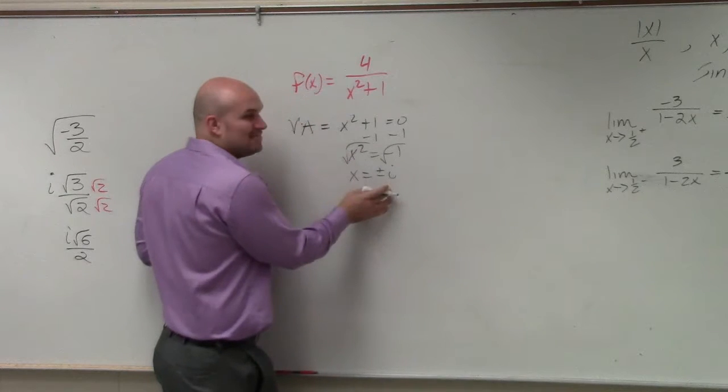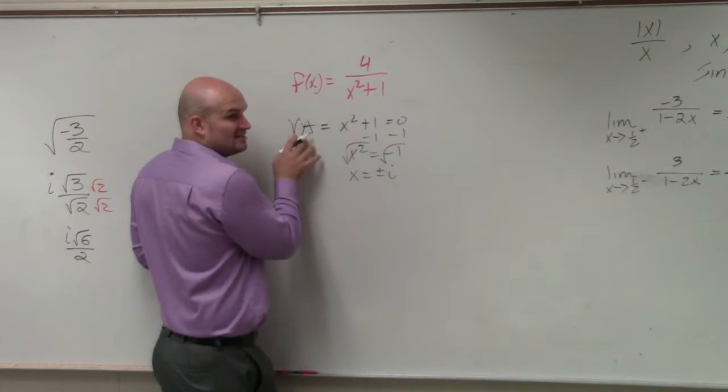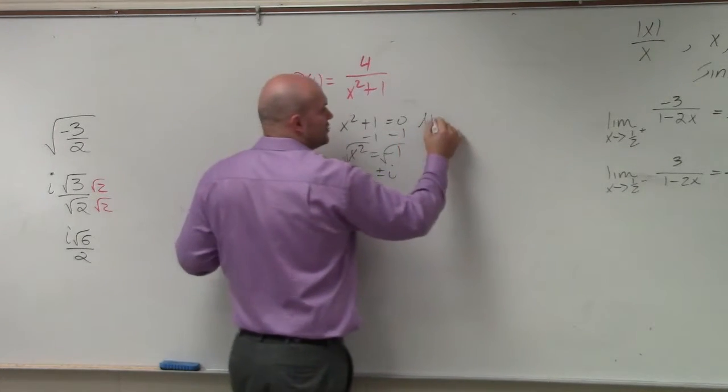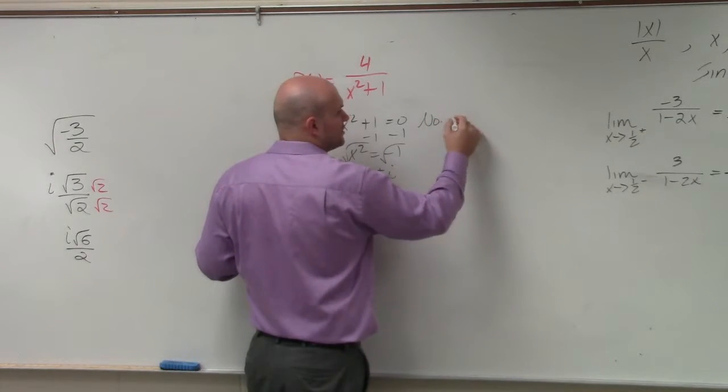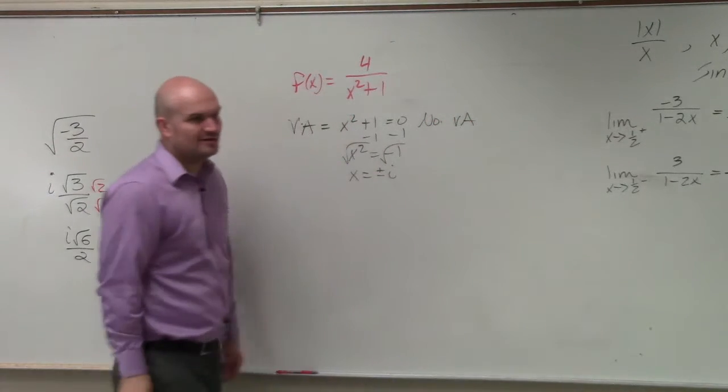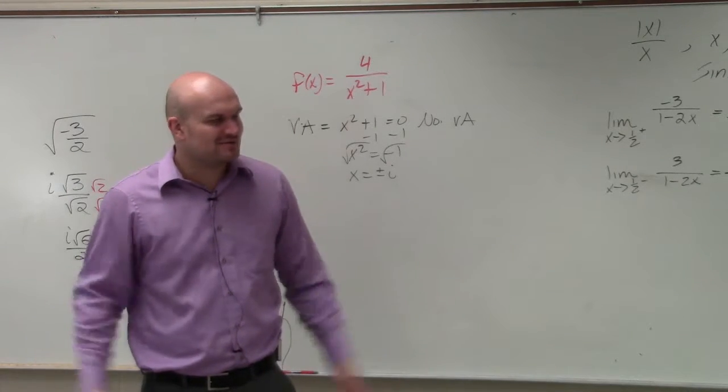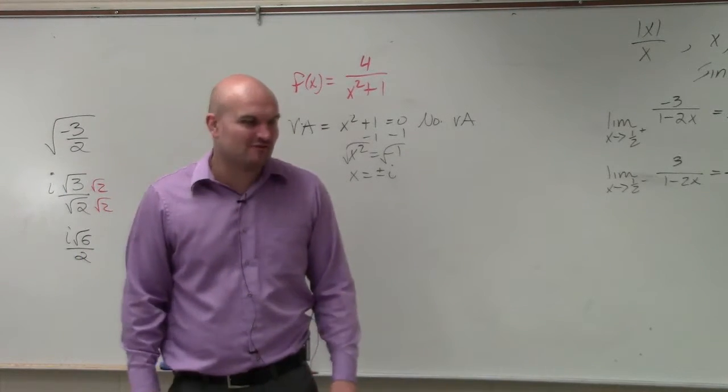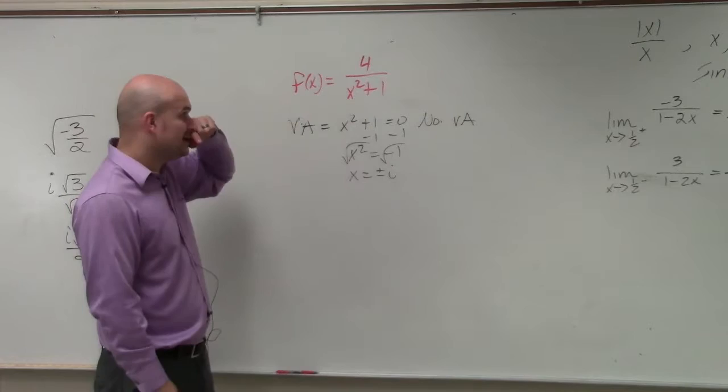So since it's only imaginary numbers that make this undefined, there are no real vertical asymptotes. There are imaginary vertical asymptotes, but we don't really care about those. So there are none.